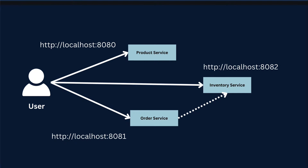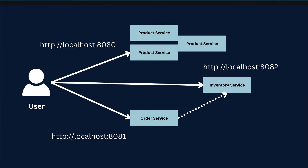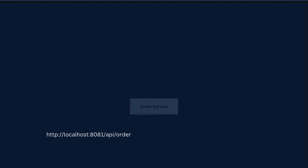Another problem is that we can have multiple instances of a service running inside our project. For example, we can have three instances of product service, two instances of order service, and one instance of inventory service. If one instance of product service goes down and we have hardcoded that URL, then clients cannot access the product service anymore, which is not an acceptable situation. As a solution, we can introduce an API gateway.